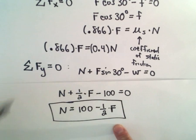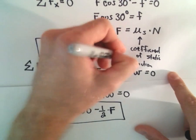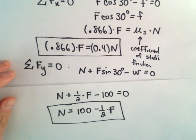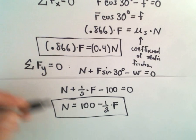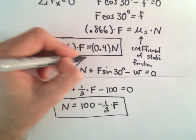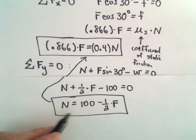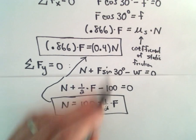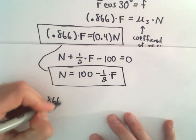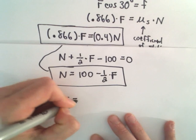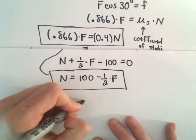And now we've got two equations, though. We have two equations that involve F and N. So all I'm going to do is just a little bit of substitution. So I'm going to substitute that N equals 100 minus 1 half times F into my first equation. And then we can simply solve for F, and that's going to tell us the force, and that's what we wanted.